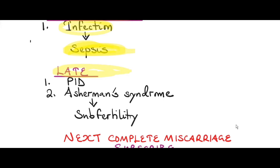Late complications of manual vacuum aspiration: if you've done an overzealous manual vacuum aspiration, you can have what we call Asherman syndrome. Asherman syndrome is intrauterine adhesions caused by overzealous manual vacuum aspiration. You can also have pelvic inflammatory disease - when you did your manual vacuum aspiration you introduced organisms into the uterus. Asherman syndrome as well as chronic PID can result in subfertility.